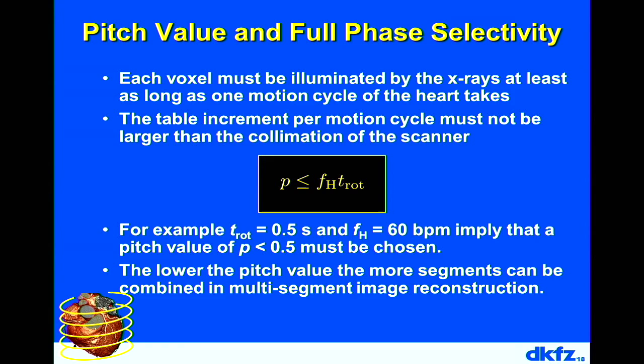For a retrospectively gated cardiac CT scan — where you decide which cardiac phase to reconstruct after acquisition — the spiral must have a very low pitch value. Specifically, each voxel of the patient must be seen by the X-rays for as long as one heart cycle takes; otherwise you cannot retrospectively choose the reconstruction heart phase. There is a constraint equation that determines this pitch value.